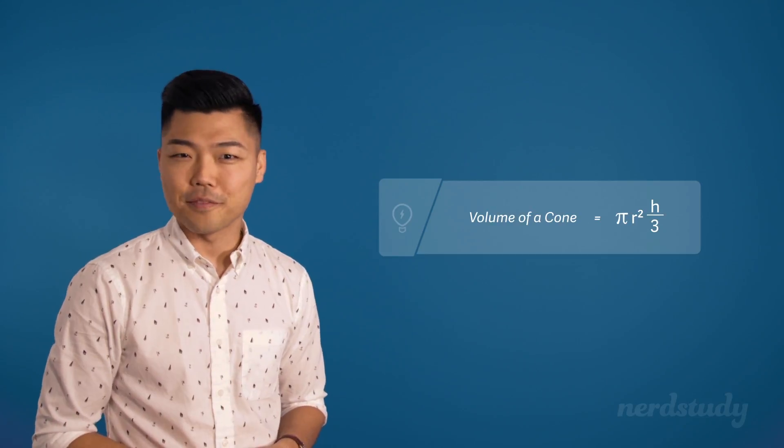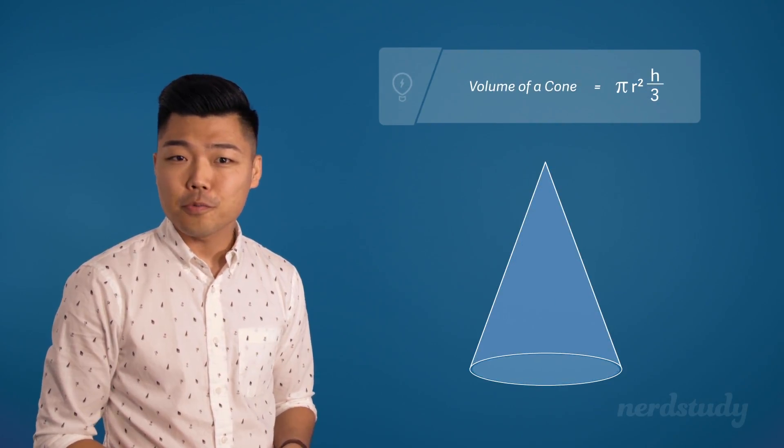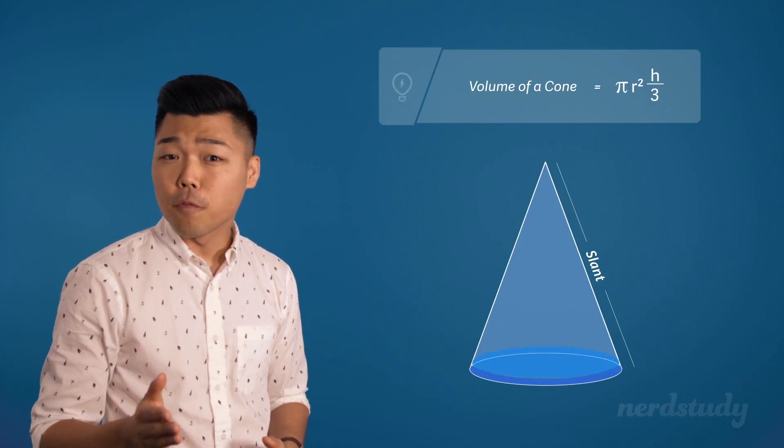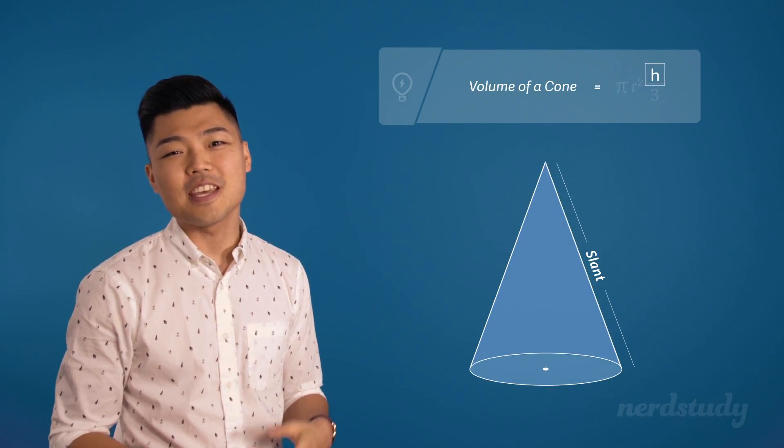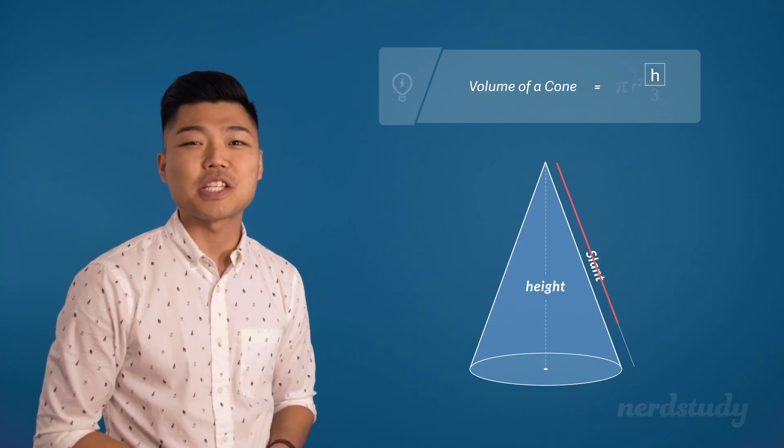So the volume of a cone is equal to pi times r squared times h over 3. Now, whereas when you're finding the surface area of the cone, you're looking for the slant height, when you're looking for the volume of a cone, this h over here is referring to the actual height of the cone, definitely not the slant height.